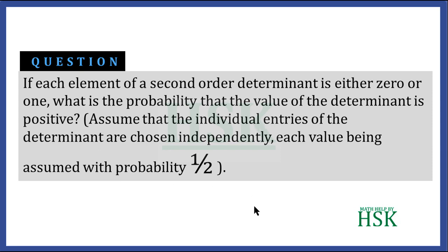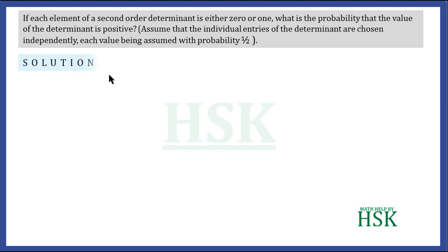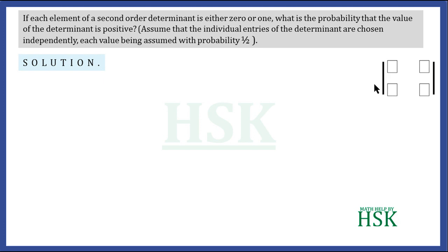To solve this question, we consider a 2×2 determinant which has 4 entries, and each entry can be 0 or 1. Each element of the determinant is assigned 0 or 1 with a probability of 1/2 — that is, there is an equal possibility that the element can be 0 or 1.